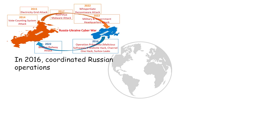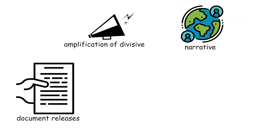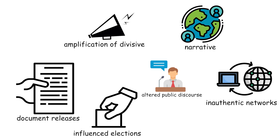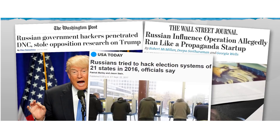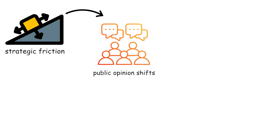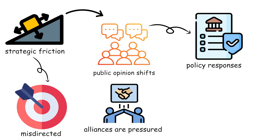In 2016, coordinated Russian operations combined the theft and leak of political correspondence with wide-reaching social media campaigns. The timing of document releases and the amplification of divisive narratives across inauthentic networks altered public discourse, influenced elections, and tested alliance cohesion. Documented wartime-aimed campaigns have included harvesting and public release of political correspondence, the timing of leaks to coincide with military moments, and coordinated narrative pushes across platforms to fracture domestic consensus. The result is strategic friction: public opinion shifts, policy responses are delayed or misdirected, and alliances are pressured by internal politics.